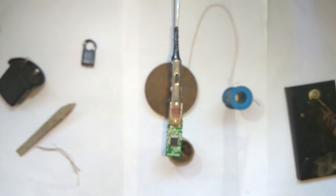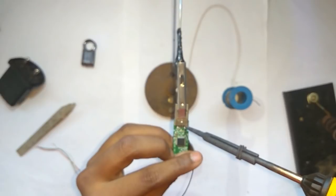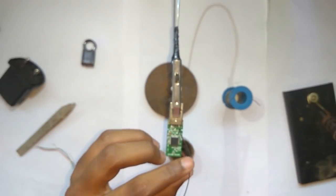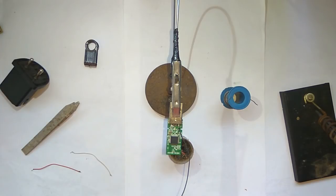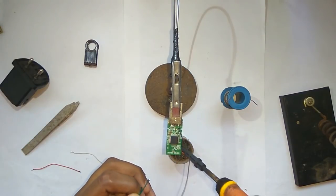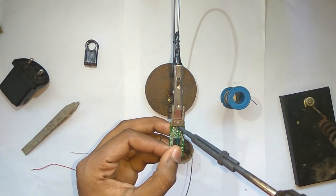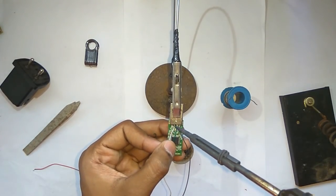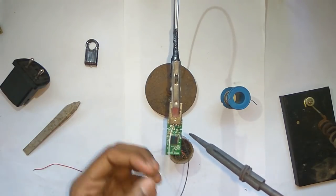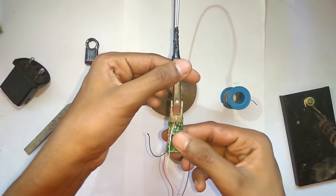So first we will connect the ground wire, then is the green one, then the white and the red one. So the pen drive part is done.